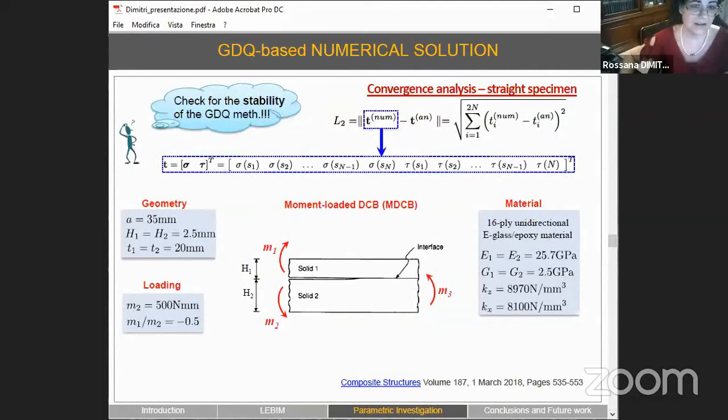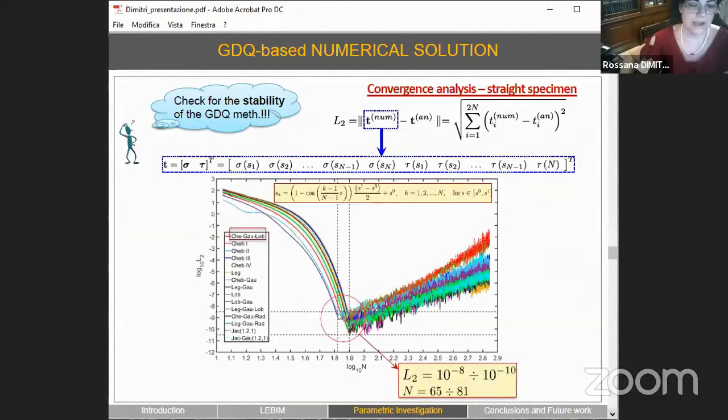In a context where the placement of grid points within the domain can affect significantly the accuracy of results, we start the numerical study with a convergence analysis by considering the traction vector along the adhesive interface defined by means of its normal and tangential components and compute the L2 norm of the error for different discretizations. Here are the plots in a bilogarithmic way where you can see the very fast rate of convergence of the numerical solutions for the different discretizations, where it is required a very limited number of collocation points ranging from 65 to 81 in our case to obtain very accurate results.